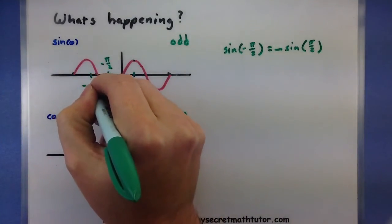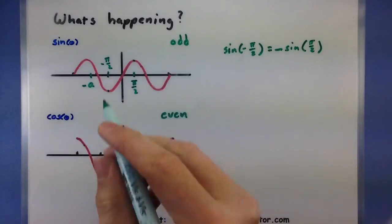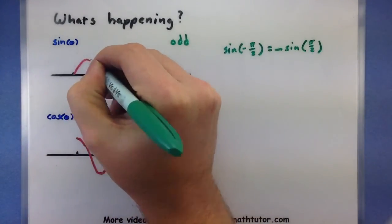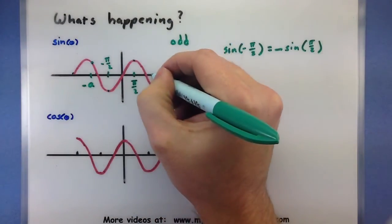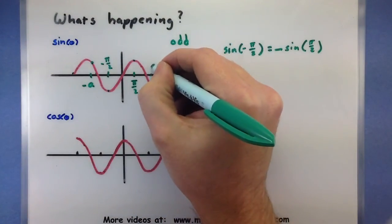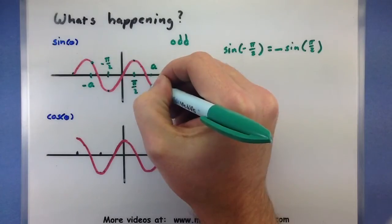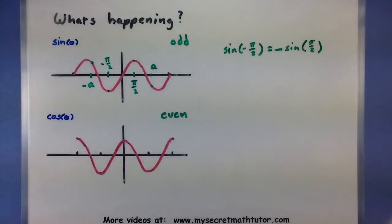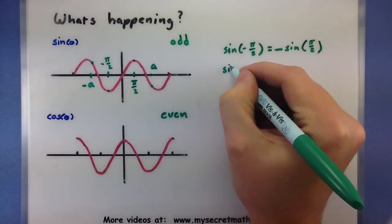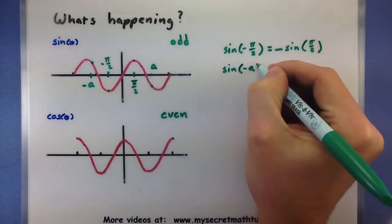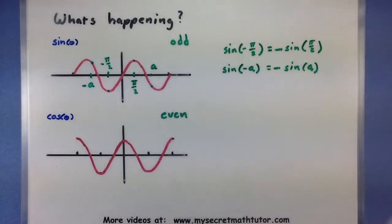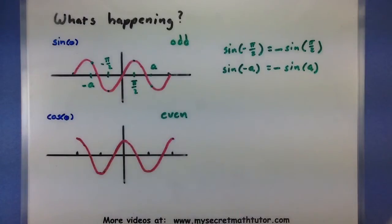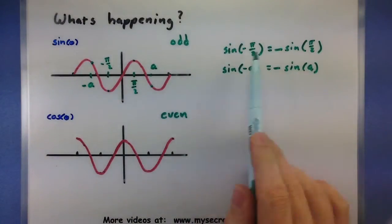Let's say I plug in something like negative a. I get something out — not really sure what it is, but I get something. If I plug in the positive a, I'll get the same value, but it's different in sign. So the sine when I plug in a negative a is the same as taking the sine of a positive a, just different in sign. You can see this works for any value, and this is exactly what the identity is telling me.